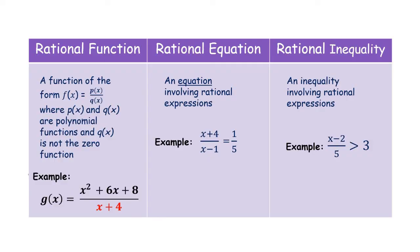To clarify this definition, we have this table. A rational function has the form f of x equals p of x over q of x, where p of x and q of x are polynomials, and q of x is not the zero function. For example, g of x equals x squared plus 6x minus 8 all over x plus 4. Notice the denominator x plus 4 should not be equal to zero.